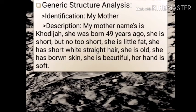Genetic structure analysis — My Mother. Identification: My mother's name is Kodija. She was born 59 years ago. Description: She is short, but not too short. She is a little fat. She has short white straight hair. She is old. She has brown skin. She is beautiful. Her hand is soft.